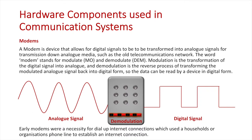Early modems were a necessity for dial-up internet connections in households. You might ask your parents about it — or if you're old enough, you'll remember them. They had a distinct loud noise when connecting to the internet, and when in use the phone line was tied up because they used those phone lines for sending data down analog mediums. You couldn't use the phone to maintain your internet connection, and if you picked up the phone you could actually hear the signals going down those wires. The modem is not a central connecting device like a hub, switch, or router — it's purely used to modulate and demodulate analog and digital signals so the computer can read digital and the mediums can transmit analog.